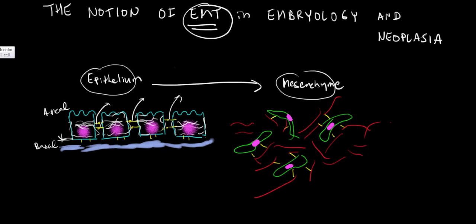In epithelia, the molecules that grab cells to each other are called cadherins. CA for calcium, because they're calcium-dependent, and 'herins' because they adhere. So cadherins grip cell to cell — imagine this cell has a cadherin and this cell has a cadherin, and they're holding like two hands holding together, except it's many, many hands. That's what creates the stickiness of cells in an epithelia.